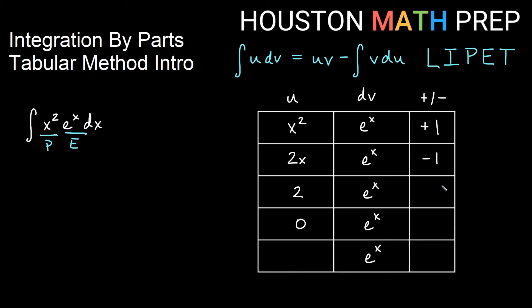In our right column, we'll have plus-minus one alternating. So diagonally, we will get all of the terms for our answer.